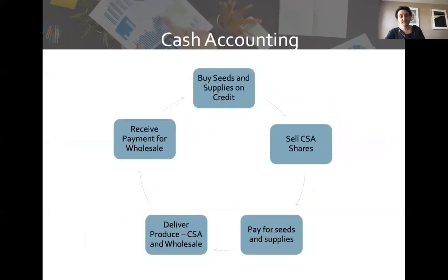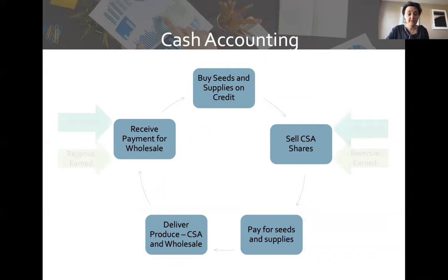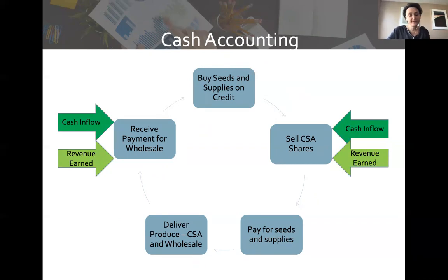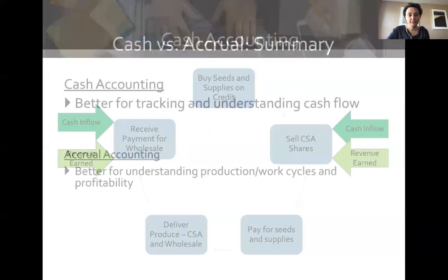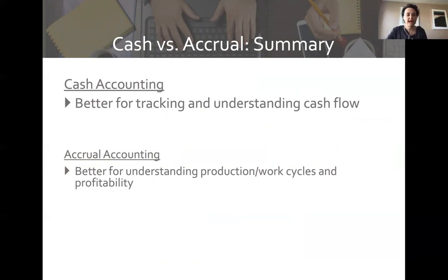Cash accounting is quite simple: when cash flows out, that's when you record the expense; when cash flows in, that's when you record the revenue. Cash accounting is better for tracking and understanding cash flow — you can look back and plan when cash will flow in and out of your business. Accrual accounting is better for understanding your profitability and your production and work cycles.